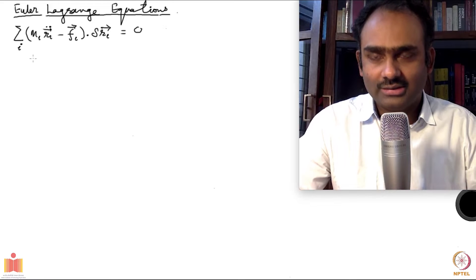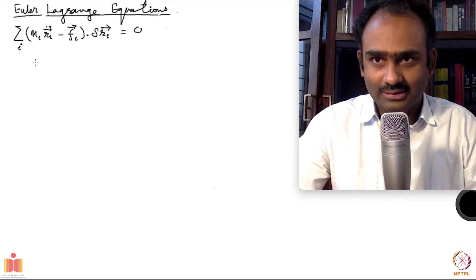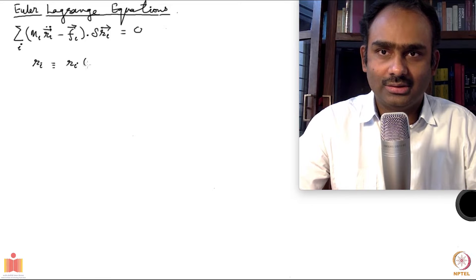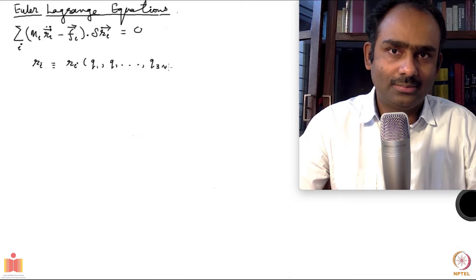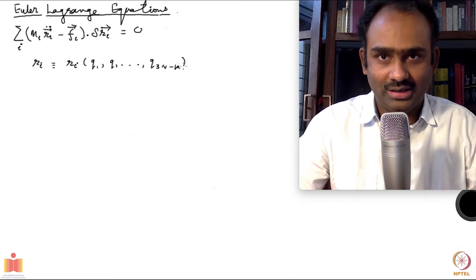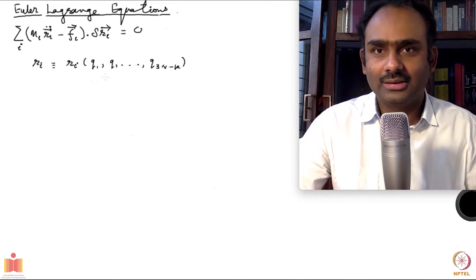Now, instead of the Cartesian coordinates R I will convert everything to the generalized coordinates. Rᵢ is a function of all the Q coordinates — there are 3n minus k of them, where k is the total number of independent constraints — and we have already assumed that we have holonomic constraints.